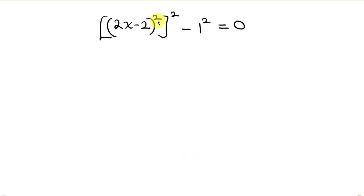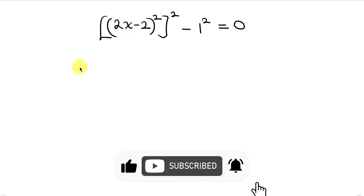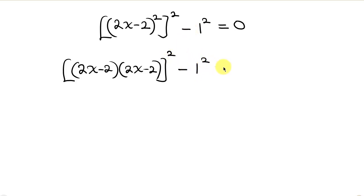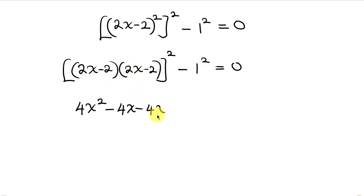Our next step will be to expand (2x minus 2) all raised to the 2. This can be written as (2x minus 2) times (2x minus 2), and this whole thing is raised to the power 2, minus 1 squared, equal to 0. Expanding: 2x times 2x is 4x squared, minus 2x times 2 is 4x, minus 2 times 2x is 4x, and minus times minus gives plus, so 2 times 2 is 4. This is raised to the 2, minus 1 squared, equal to 0.